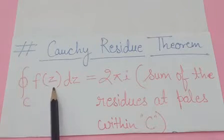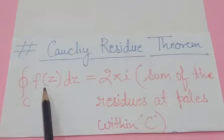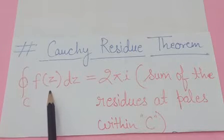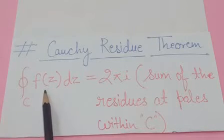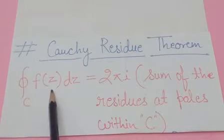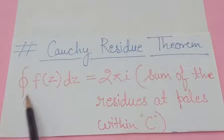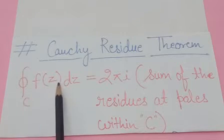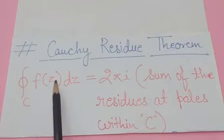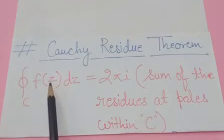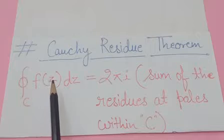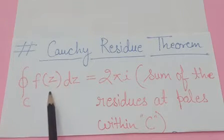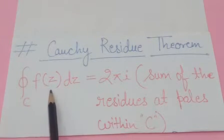For the function, we need to keep certain properties in mind. The function should be analytic within that closed curve C except at the poles. At all points other than the poles, the function should be analytic — only then can we use the Cauchy Residue Theorem.